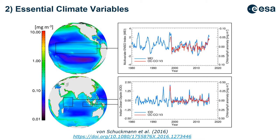Unlike plants in the terrestrial world, phytoplankton have life cycles that are very short — in the order of days and weeks. This means phytoplankton can respond rapidly to changes in climate.